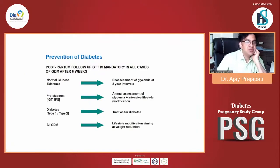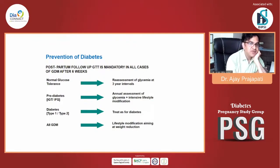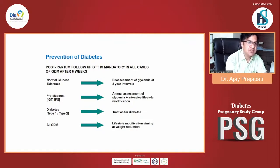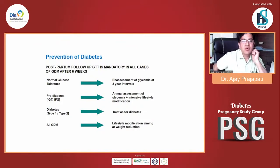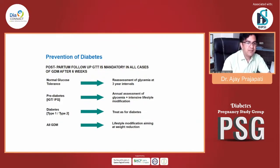What should be the strategy to prevent development of diabetes later on? Postpartum follow-up of GDM is mandatory in all cases after 6 weeks. At the end of 6 weeks, if normal glucose tolerance, we reassess glycemia at 3 years. If at the end of 6 weeks the patient has pre-diabetes — impaired glucose tolerance or impaired fasting glucose — then annual assessment of glycemia and intensive lifestyle modification should be implemented. Intensive lifestyle modification includes proper exercise training, dietary modification, well-balanced diet, stress-free life, proper sleep pattern, and timing and meal content of diet.